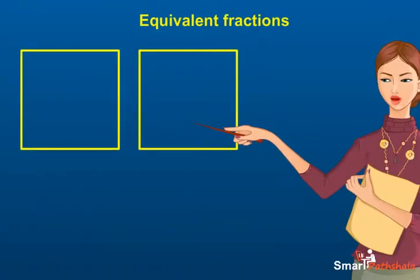In the first rectangle, we divide the rectangle in four parts and shade two parts out of it. Then, the fraction for the shaded part will be two by four.